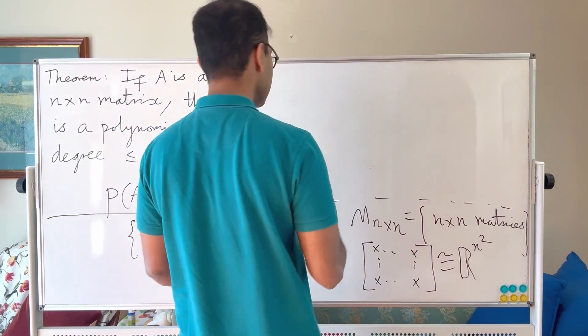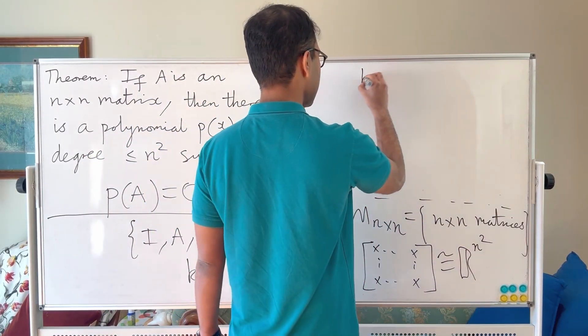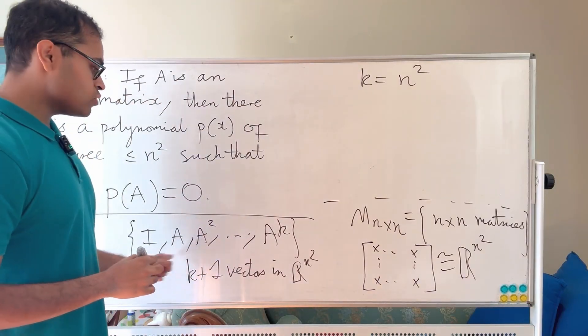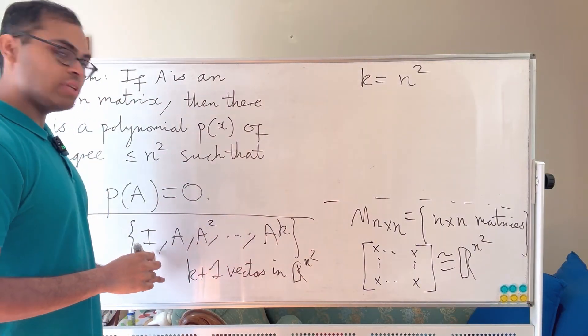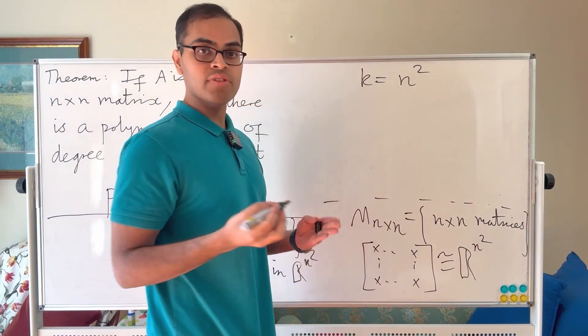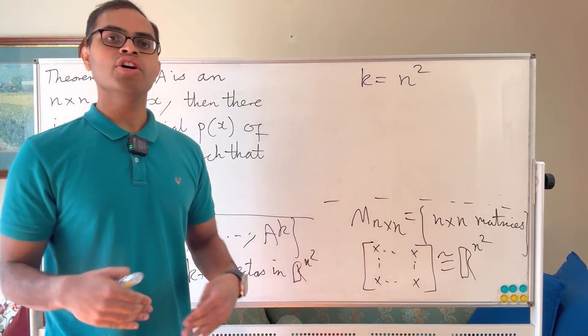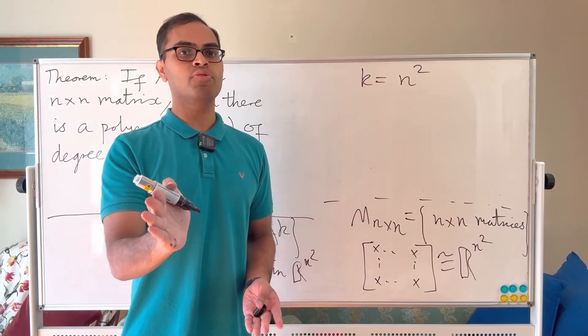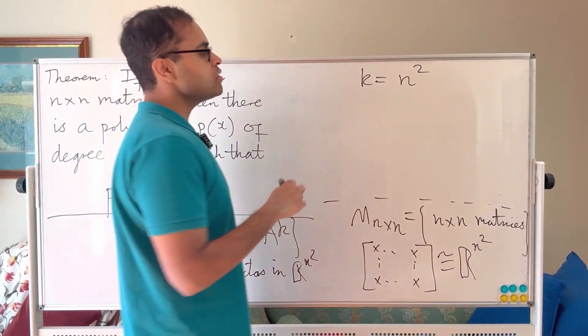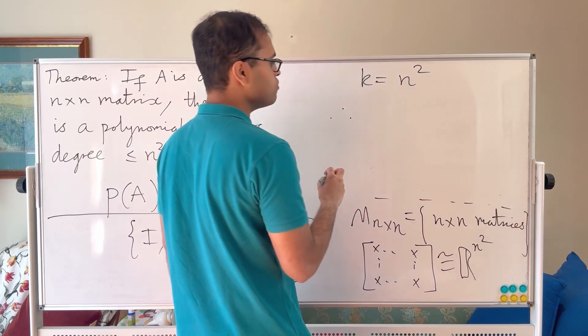And that linear relation will give you a polynomial. To write it out precisely, you can think about because if you take k is equal to n squared, then there're going to be n squared plus one vectors here. Because remember, we're including the identity. And so you're going to say that because you have n squared plus one vectors in n squared dimension space, there's going to be a linear relation that requires proving. That's a separate question, but that's an intuitive principle. So but it does require rigorous proof.